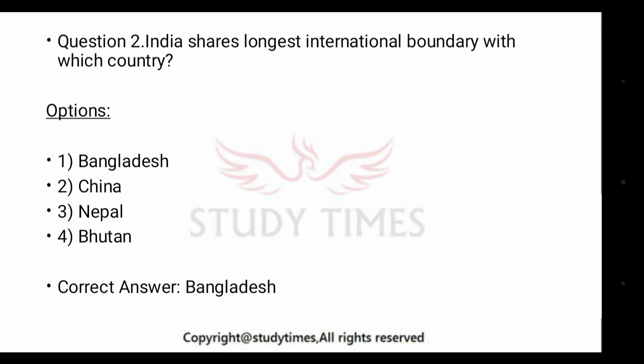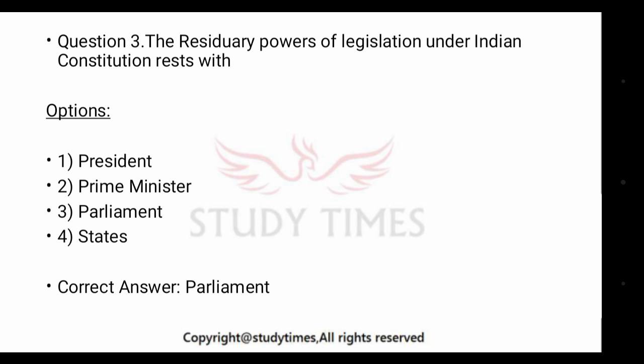The borderline between Nepal and India is called the Red Olive Line, and the borderline between Bhutan and India is called the Indo-Bhutan line. There are one or two more international boundaries that may also come in the exam — for example, the international boundary between Pakistan and India is the Radcliffe Line.